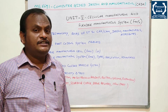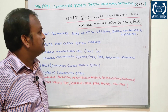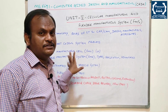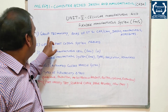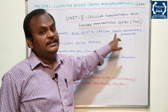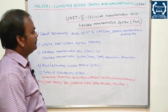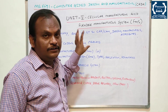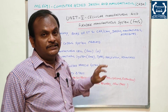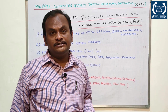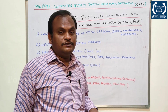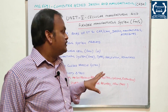Unit 5 is Cellular Manufacturing and FMS — Flexible Manufacturing System. The first question is Group Technology — roles of GT in CAD/CAM, design, manufacturing attributes. You need the definition as well as design-oriented and manufacturing perspectives. The second question is OPITZ part coding system problems — architecture oriented, CAM oriented part coding.